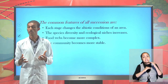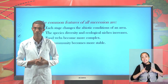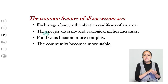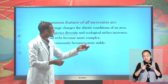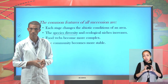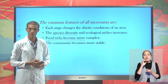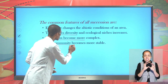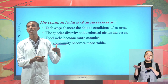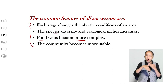Each stage of succession changes the physical factors of an area for the next succession to embed. Species diversity of an area becomes more complex, and ecological interactions including food webs and food chains become complex as well. Finally, the communities become climax and more stable, not easily vulnerable to other environmental factors. This is the common feature that all successions share.